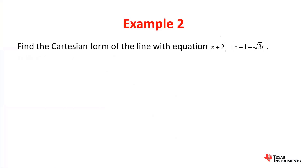This is the equation of a circle centered at the point negative 3 comma 0 with a radius of 4. Moving on to example 2. Now we have to find the Cartesian form of the line with equation: absolute value of z plus 2 is equal to the absolute value of z minus 1 minus root 3 i.